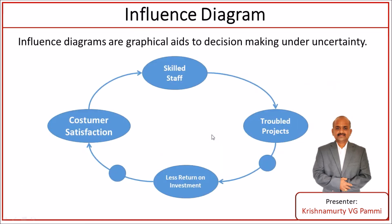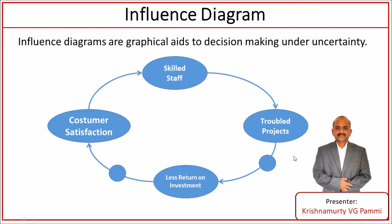Influence diagrams act as a graphical aid to decision-making under uncertainty. They provide the cause and effect relationship among identified risks, project events, project resources, and other outcomes. Simply put, influence diagrams show the cause and effect of multiple things and provide what comes first and what comes next in a graphical time-scale sequence.